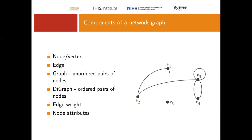In a directed graph, the order matters: describing the edge as V1 to V2 is different from V2 to V1. This is particularly useful for health service research because people tend to move, and we need to know what direction they're moving in. If we're just interested in links between services we might use an undirected graph, but we'd probably use a directed graph when interested in how patients are moving between different services.